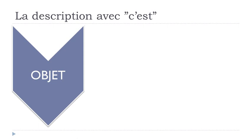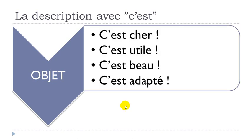To describe an object: 'c'est cher' — it's expensive; 'c'est utile' — it's useful; 'c'est beau' — it's beautiful; 'c'est adapté' — it's adapted. Remember, all these adjectives are at the masculine form.